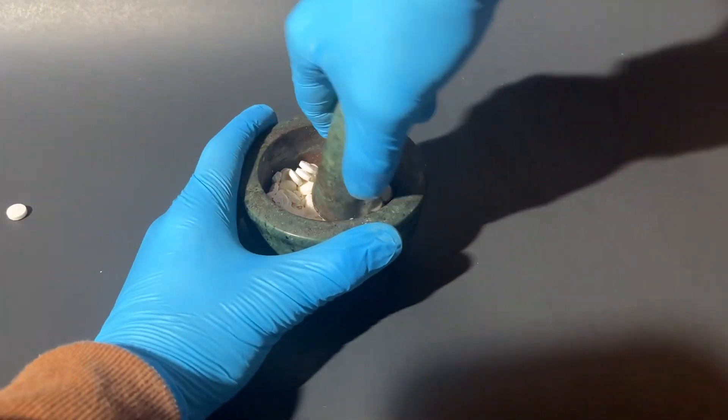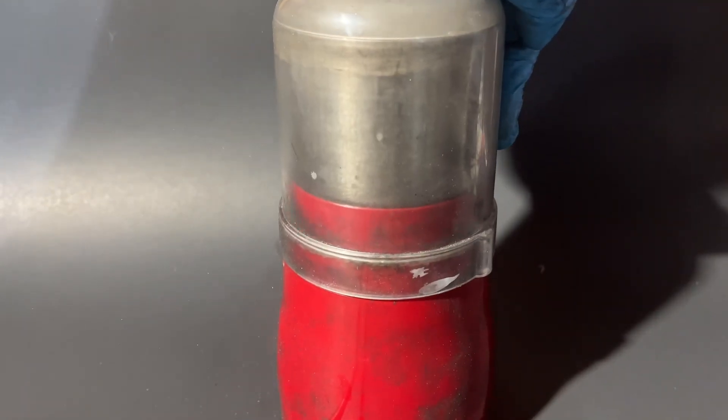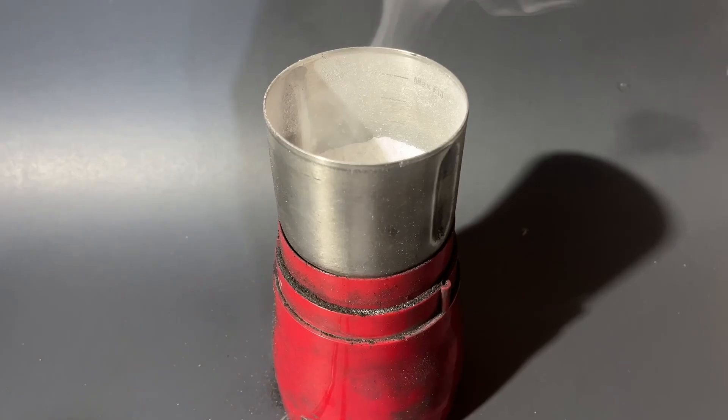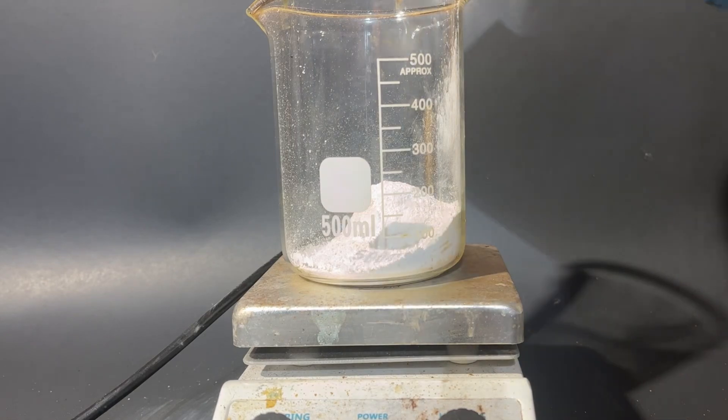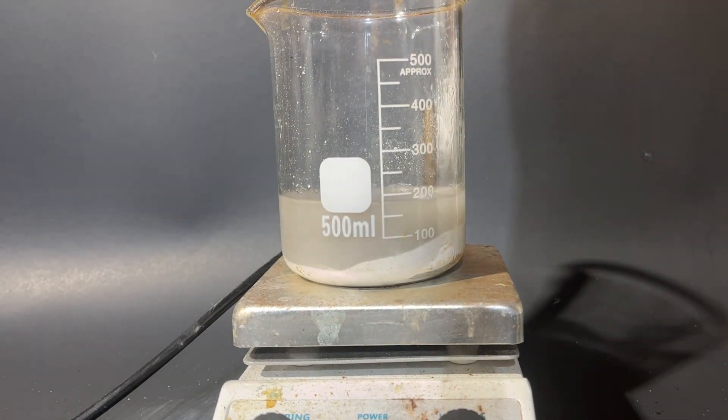First, what I'll need to do is extract the acetyl salicylic acid from the aspirin, which is as simple as grinding the aspirin up to allow it to have more surface area and then dissolving it in a solvent. In this case, I'll be using acetone, and I add enough acetone to cover up the aspirin in a half.